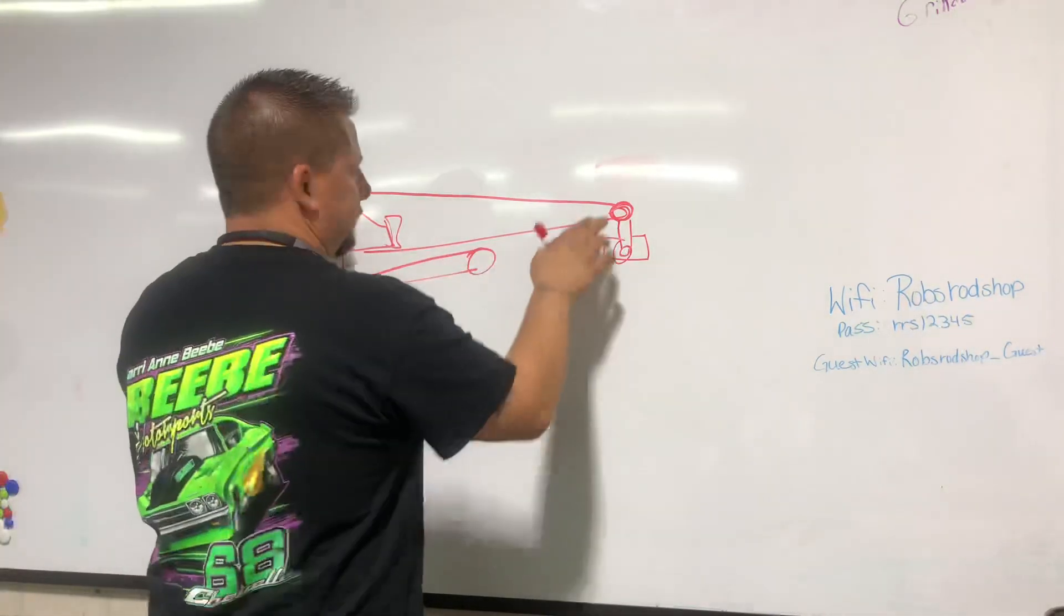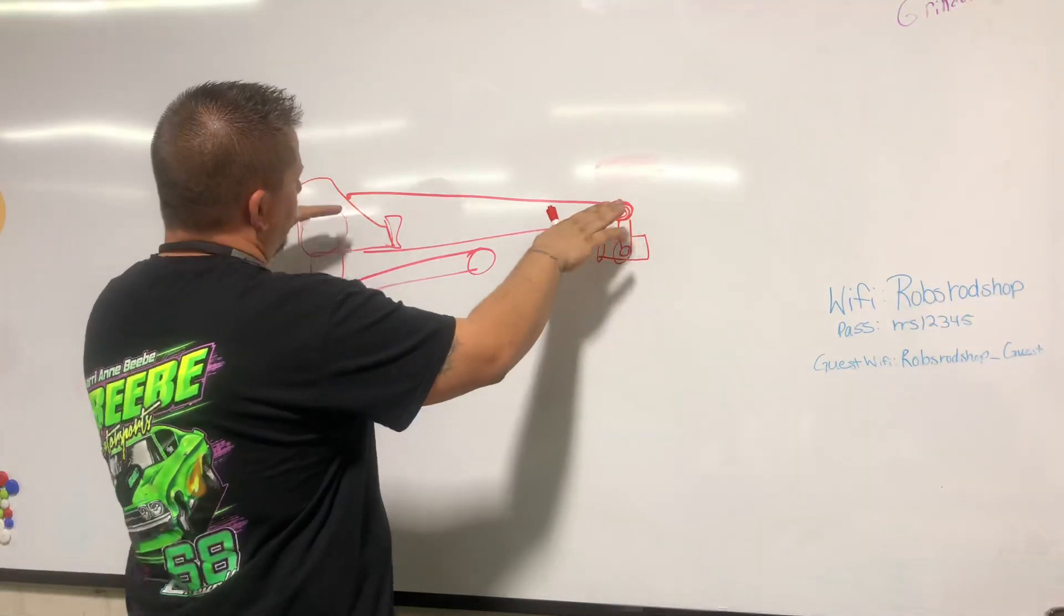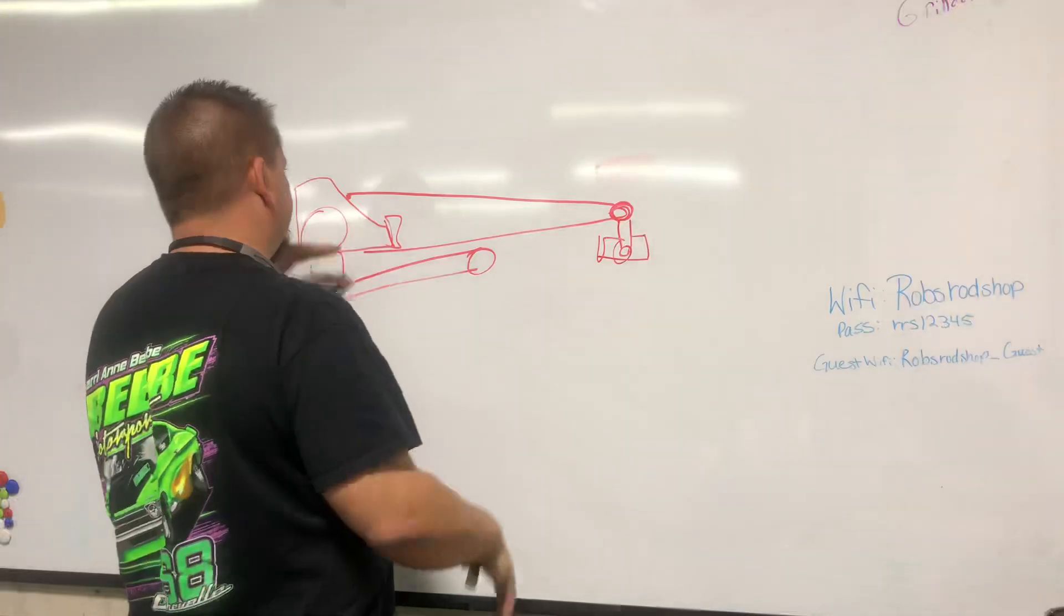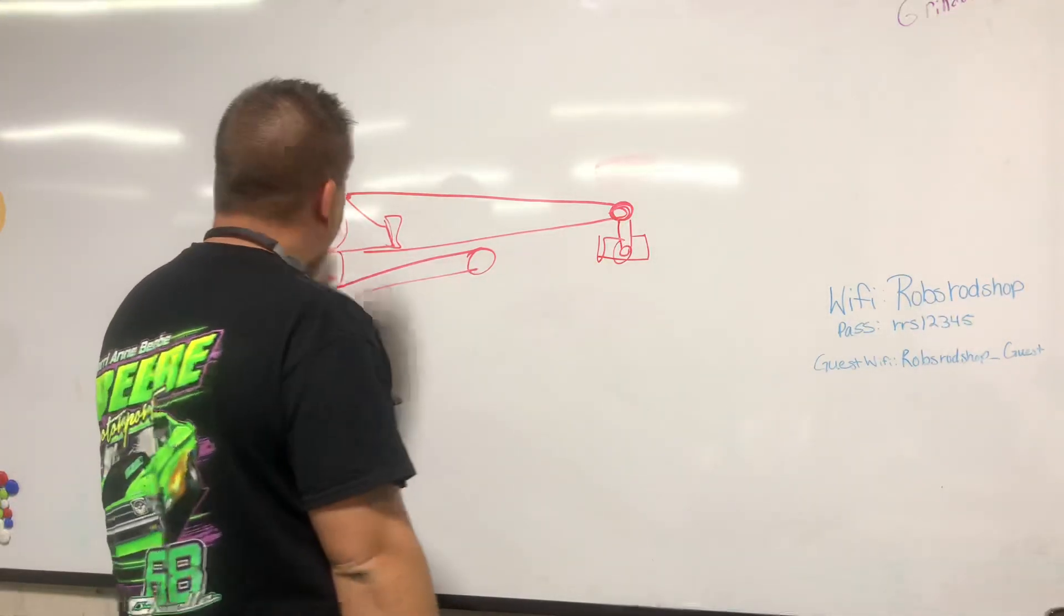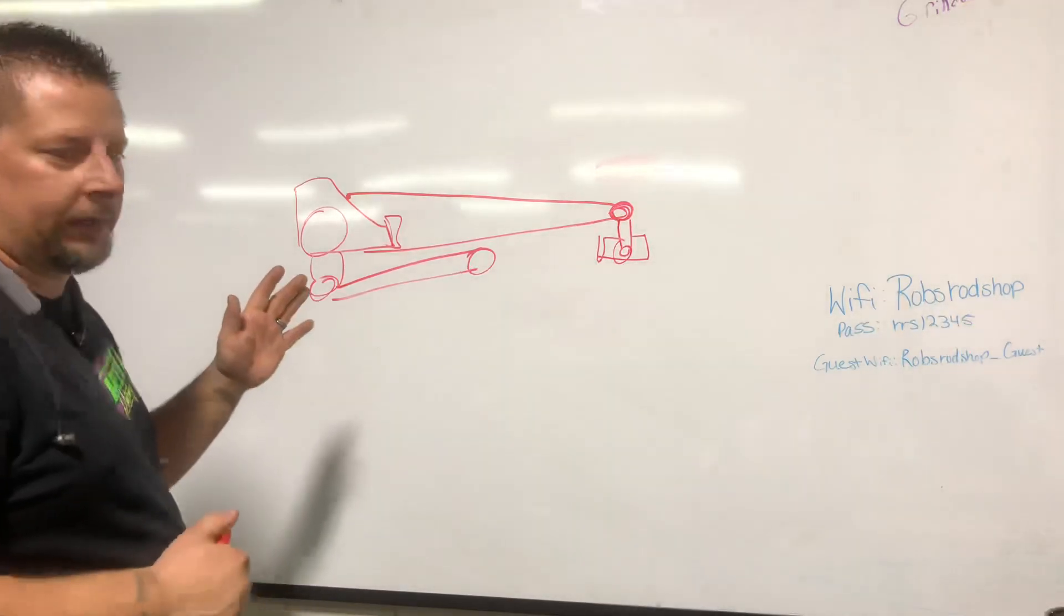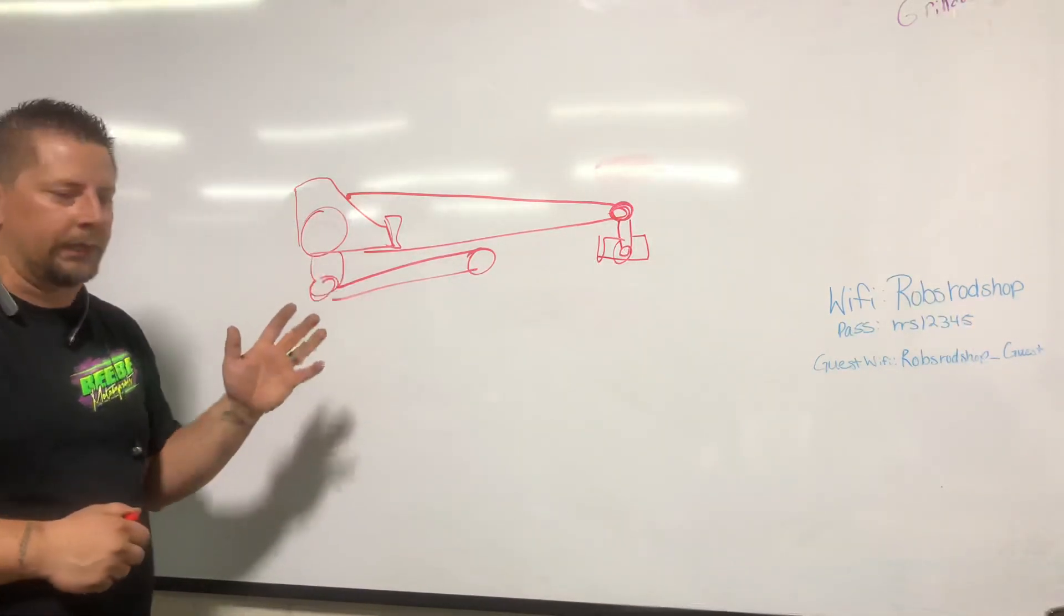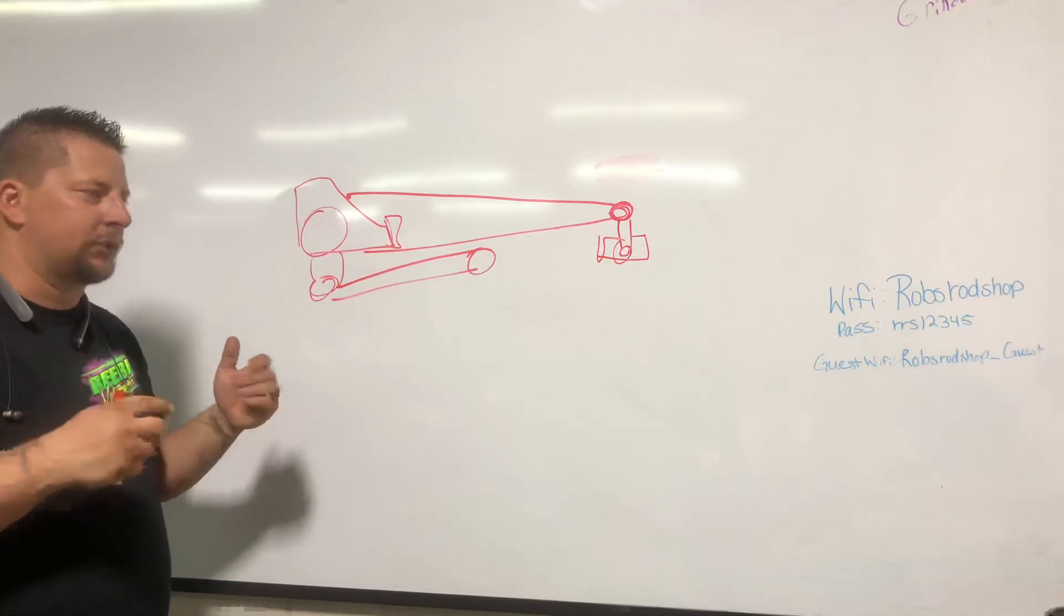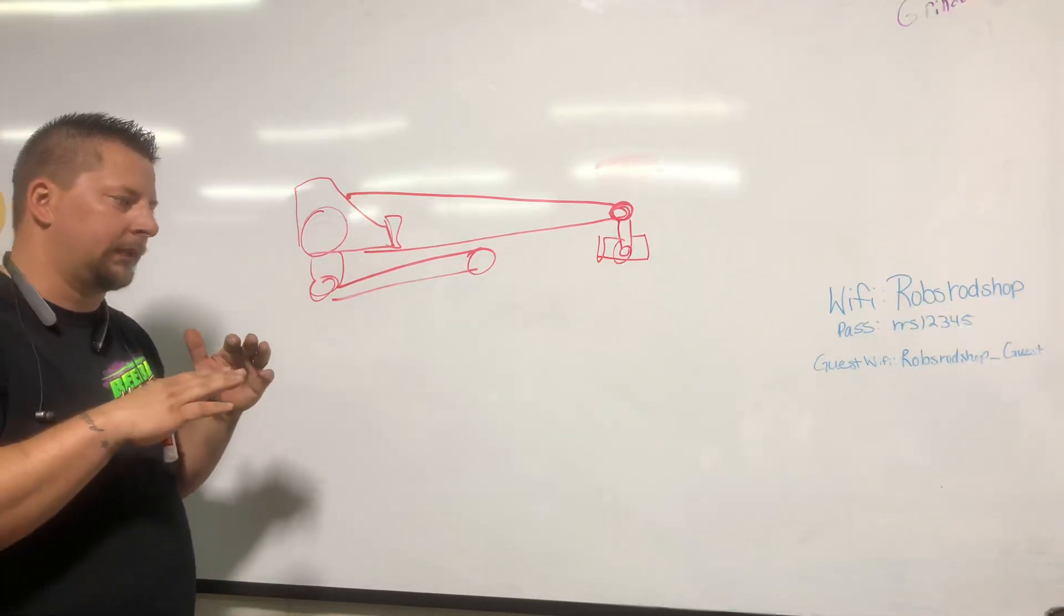It naturally wants to push the rear end down out of the car, just the geometry—that really doesn't play a big role in it. When they designed this rear end for road course racing, they basically wanted to take all the wrap out of the rear end and try to just keep it out of the situation of applying anti-squat or not applying anti-squat. They just kind of wanted to make this rear end neutral.